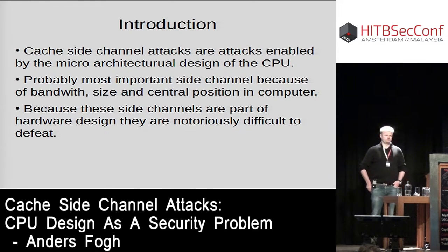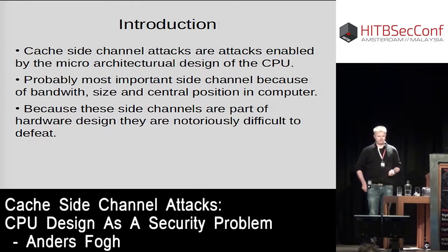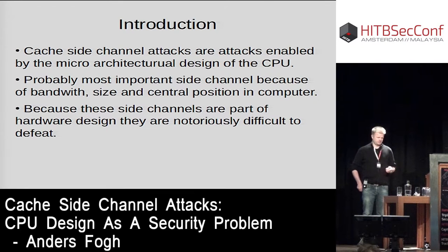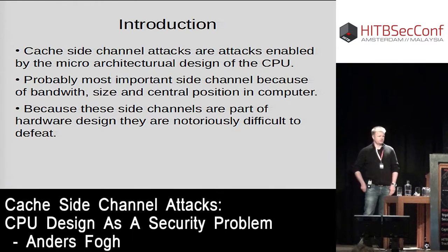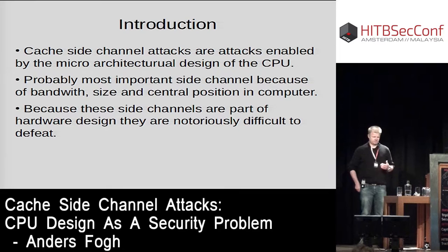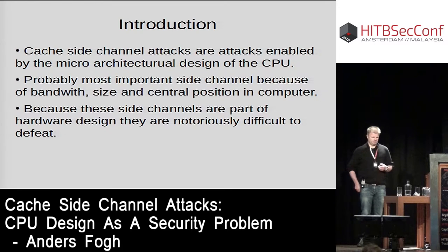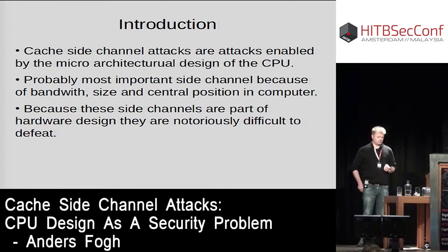What is actually happening is that we can figure out how other software uses memory and use that to infer secret information. Cache side-channel attacks are probably the most important side channel in modern computers because of the bandwidth the memory subsystem holds, the size of modern caches measured in megabytes, and their central position. You cannot write software without using memory and, by extension, the cache subsystem — unlike the floating-point unit, which most software doesn't use. This is why I think this is the most general and dangerous kind of side-channel attack in modern computers.